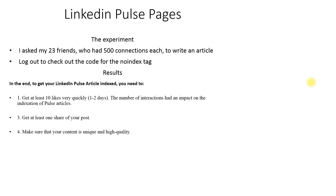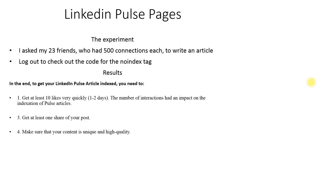To get your LinkedIn Pulse articles indexed, you need to do the following. First, get at least 10 likes very quickly — within one or two days. The number of interactions has an impact on the indexation of Pulse articles. Third, get at least one share of your posts. Fourth, make sure that your content is unique and high quality.